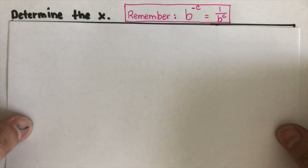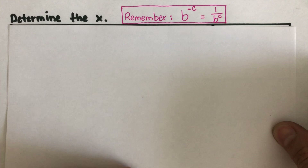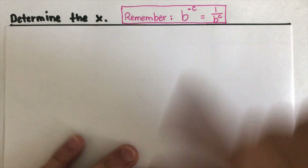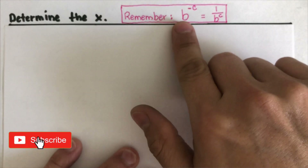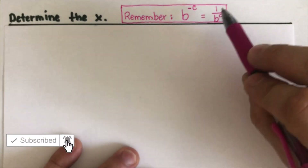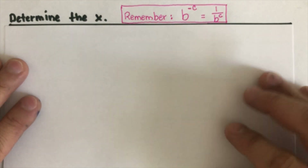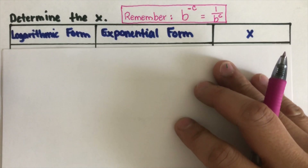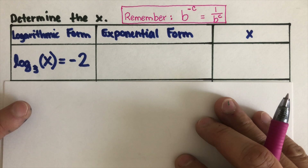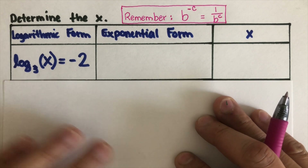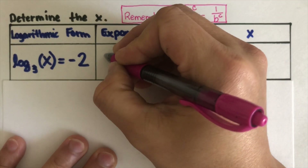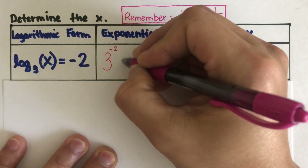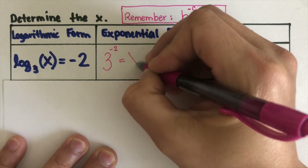Let's move on to the next example. There's one thing we need to remember: if we get a negative exponent, to make it positive we put it in the denominator and it becomes positive. So, b to the exponent negative c is equal to 1 over b to the positive exponent c. Let's have an example. Changing this to exponential form, this would be 3 to the power negative 2 is equal to x.